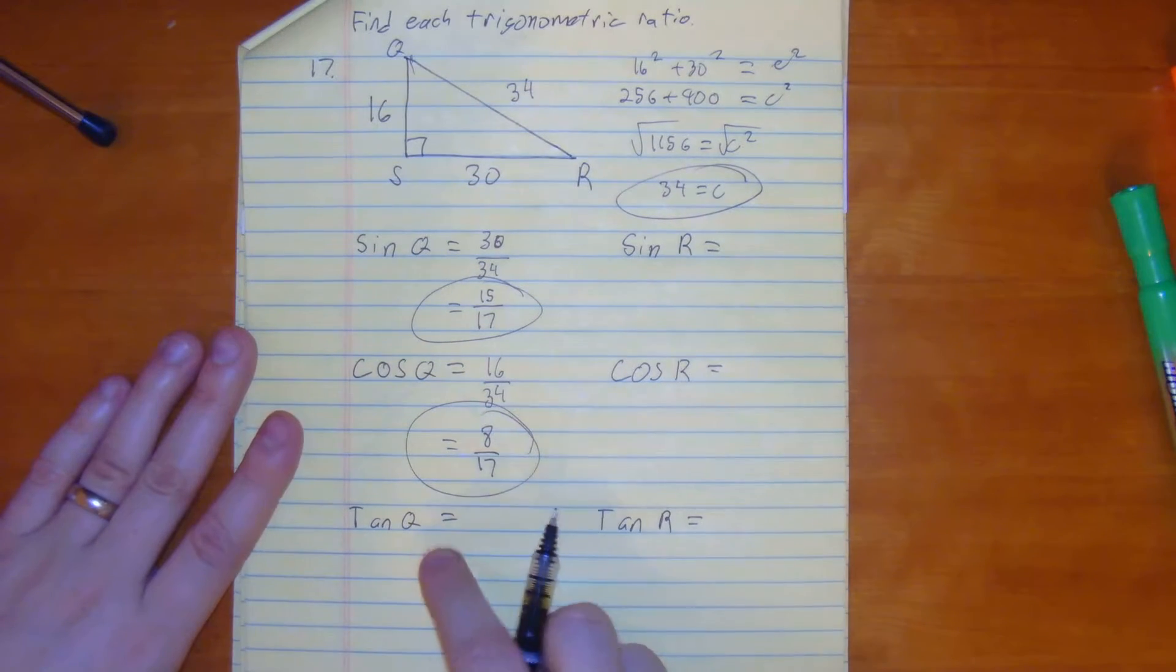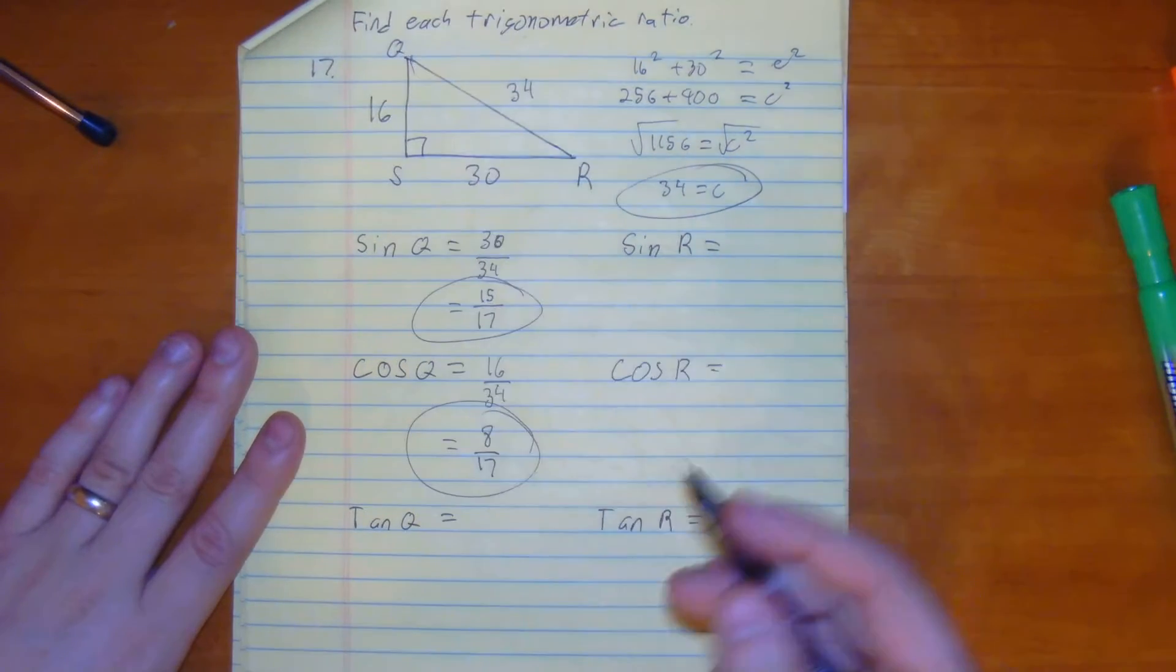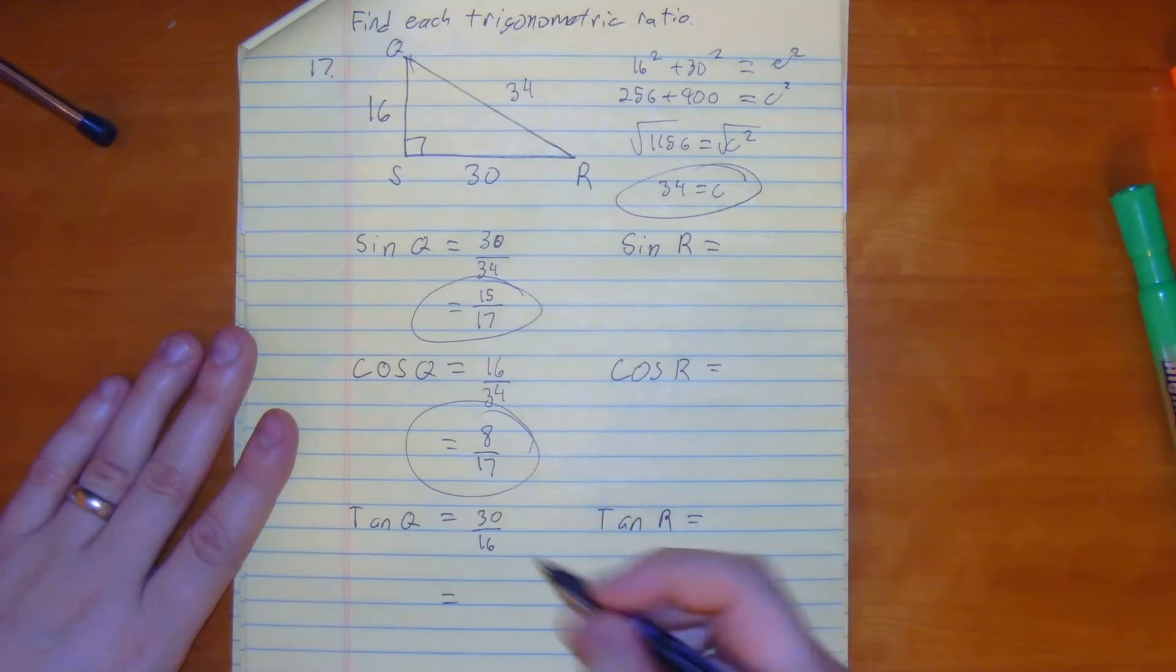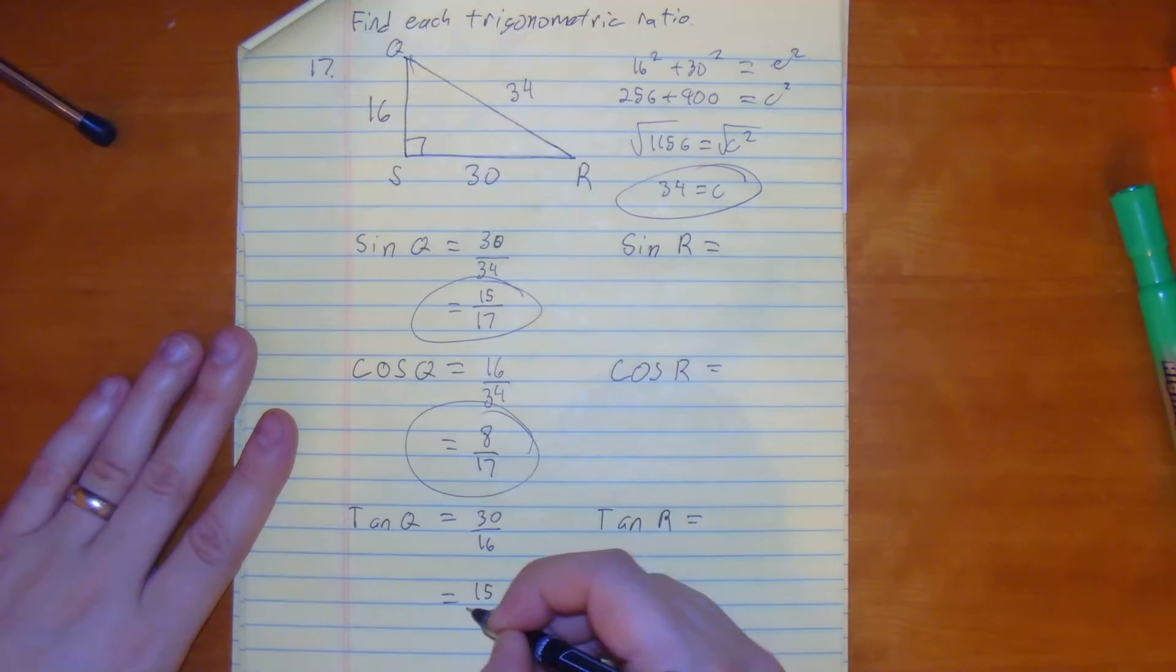Lastly, our tan of q, it's opposite over adjacent, so it would be 30 over 16. We can simplify this again by 2. It would give us 15 over 8.